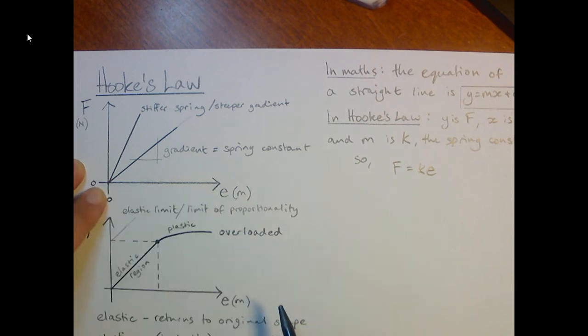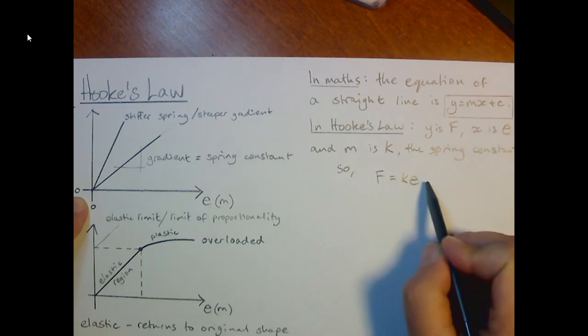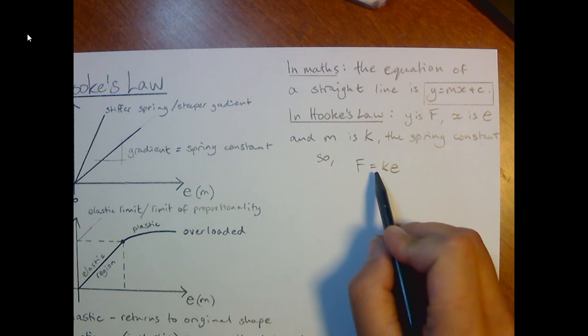Well, quite handily, because this is a directly proportional relationship, it crosses the intercept at 0. So because it crosses the intercept at 0, c is 0, and we can ignore it, because plus 0 might as well not be there. So what we've got is F equals k e.